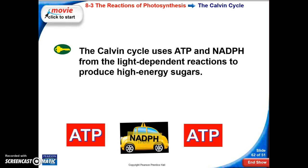The Calvin cycle, in summary, is using ATP and NADPH from the light-dependent reactions to produce high-energy sugars. I don't know how many times I've said that, but you hopefully are getting the point that this is an important point.